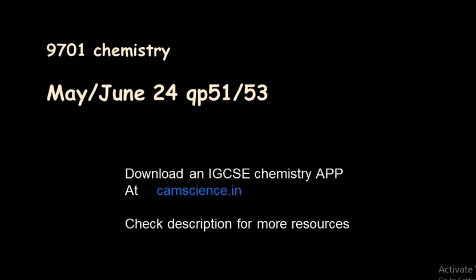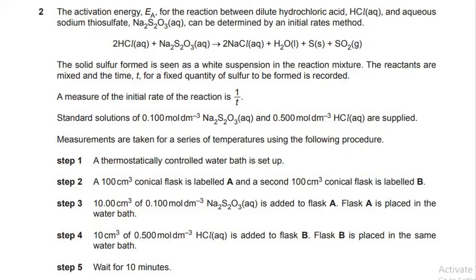We have already discussed question 1 of question papers 5.1 and 5.3 of examination series 9701 Chemistry, May/June — that is summer 2024 — and in this video we are going to discuss question 2. Here is question 2: it says the activation energy Ea for the reaction between dilute hydrochloric acid and aqueous sodium thiosulfate can be determined by an initial rates method, and here is the equation given.